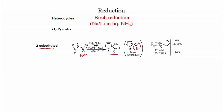If R1 = methyl and R2 = pyrrolidine amide, the yield is 25–30%. If R1 = methyl and R2 = O-isopropyl ester, yield is 20%. The yields are not very good for 2-substituted cases.